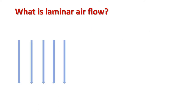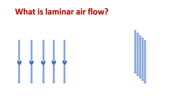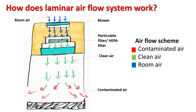Laminar airflow system allows travel of gas molecules in multiple straight lines which are parallel to each other. These layers of gas molecules are uniform in velocity and do not mix up with each other. This provides a highly efficient circulation system which captures and eliminates all sorts of impure particles present in the air and maintains a clean and sterile environment.